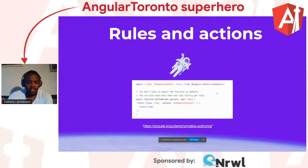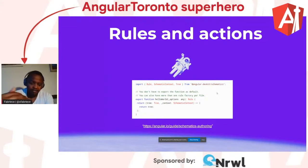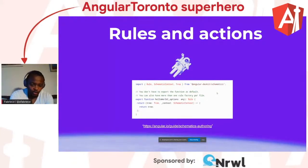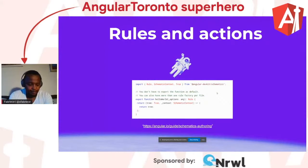When you write a schematic, there are a few concepts to be aware of: rules and actions. Every schematic is basically a function — a rule — that returns a function which takes a tree and a context and returns another rule. The property of the rule is that it is a pure function, which means you can compose them in multiple ways.